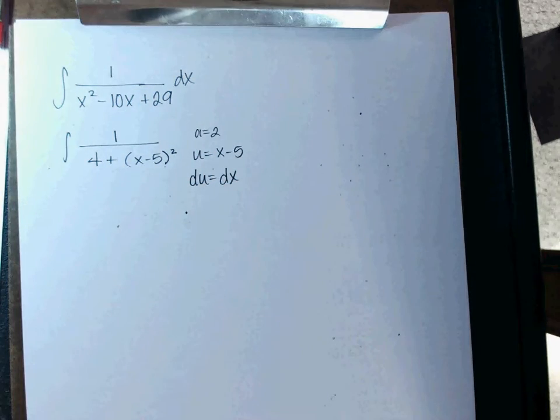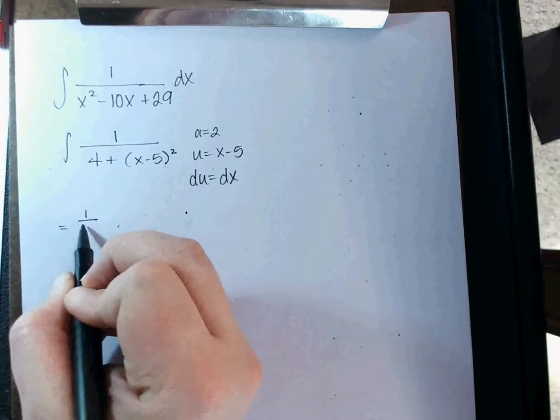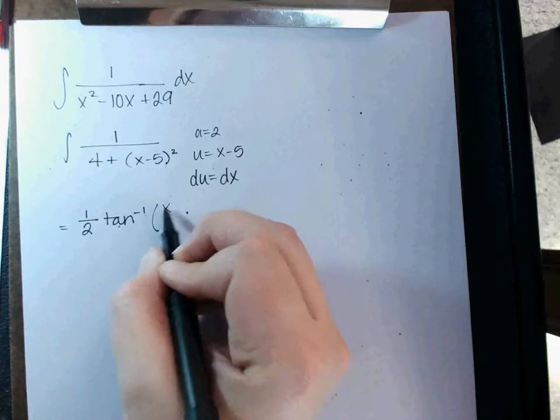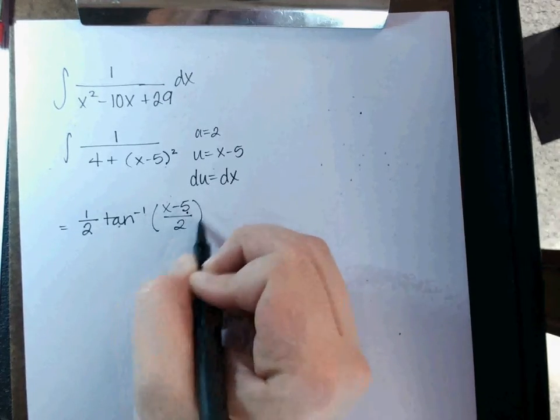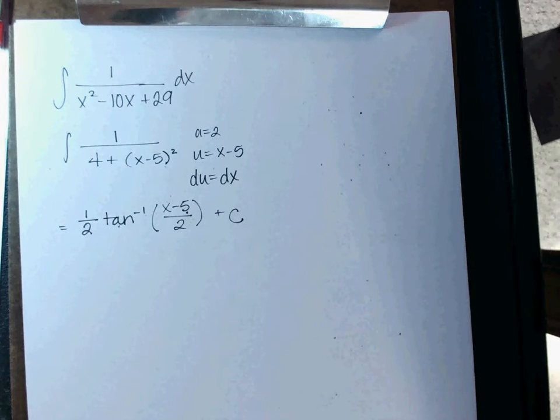Which means that DU is just 1 dx. Good. And as long as that's a 1, you can just go ahead and jump to the formula. I don't need you to rewrite it every time. So what's it going to be? 1 over A. 1 half. Inverse tan of U over A. x minus 5 over 2 plus C. Remember, you only leave off the plus C if it has endpoints. Okay?